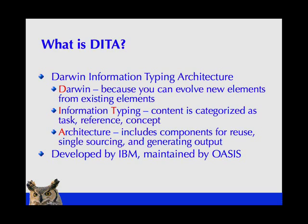DITA stands for the Darwin Information Typing Architecture. Information typing is a concept that's actually been around for quite a while. It's the idea that when you create information, you can categorize it by what type of information it is. The most common types you'll see are task, reference, and concept. Tasks are sometimes referred to as procedures. You'll see process, which is a collection of tasks, or something like an example information type. So DITA has the idea of information typing — that you categorize your content.